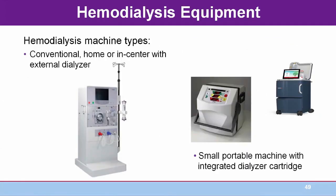There are two hemodialysis machine types. The first is the conventional machine, which can be used at home or in-center with an external dialyzer and requires a reverse osmosis, or RO, water purification machine. Small portable machines with integrated dialyzer cartridges have an internal water purification system but can be used independently of a water supply when traveling with pre-mixed bags of dialysate. The portability of these machines allows the self-care dialysis patient flexibility of both time and place for treatment.